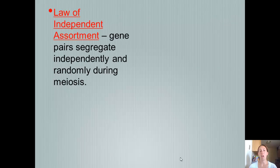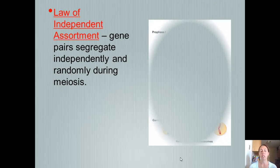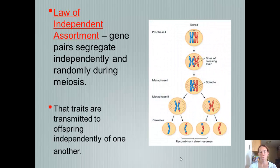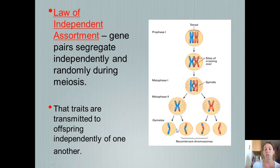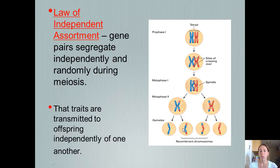Another of Mendel's laws is the Law of Independent Assortment. Gene pairs segregate independently and randomly during meiosis. The traits are transmitted to offspring independently of one another — it's randomly decided which chromosome you get from your parents.